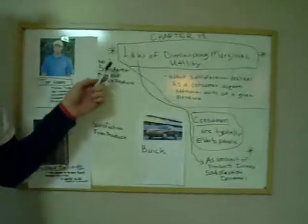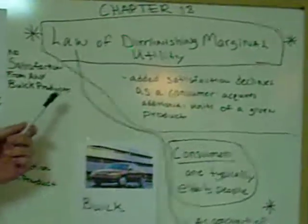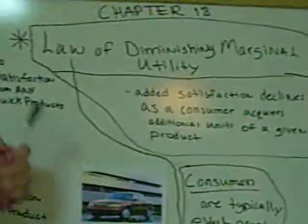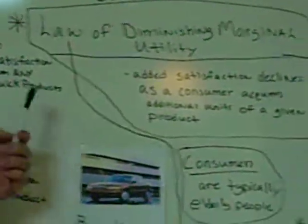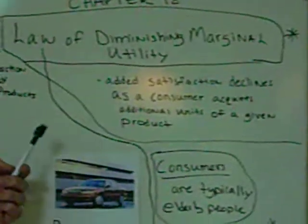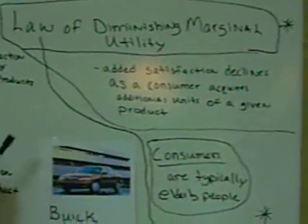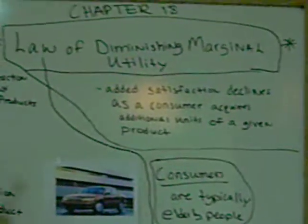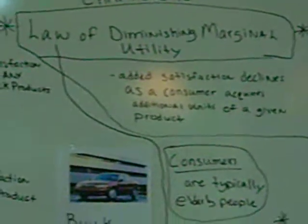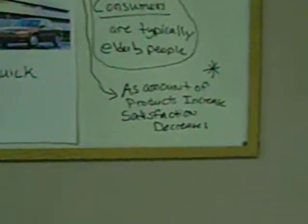Today we're looking at the law of diminishing marginal utility, which is basically the added satisfaction that declines as a consumer acquires additional units of a given product. So it's basically saying: as amounts of a product increase, satisfaction decreases.